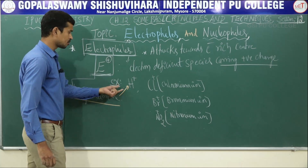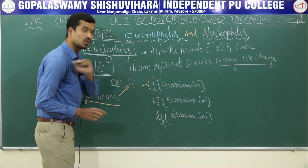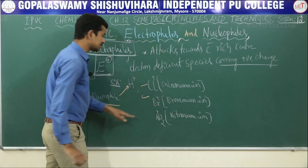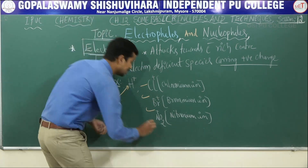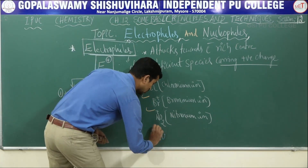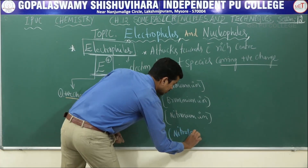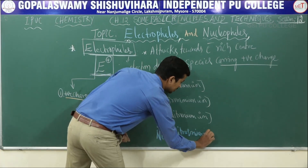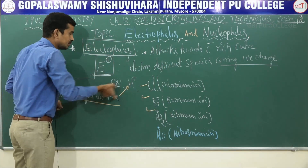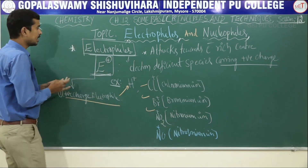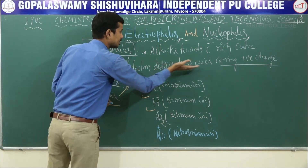H+ is called proton or proton ion. Cl+ is called chloronium ion. Br+ is called bromonium ion. NO2+ is called nitronium ion. NO+ is called nitrosonium ion. These are the examples for positively charged electrophiles.